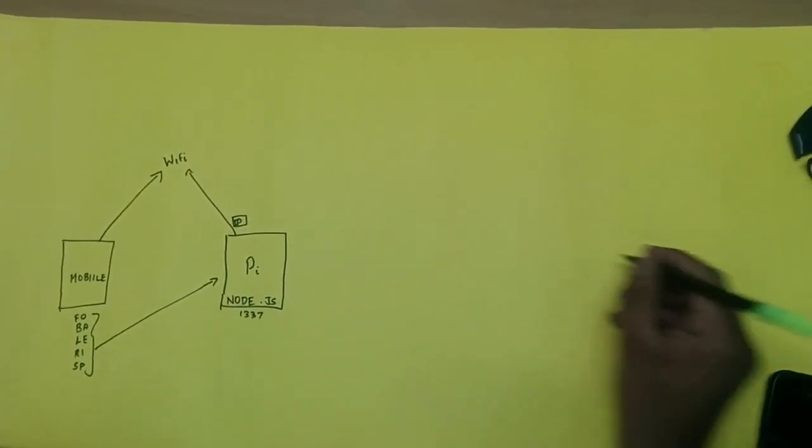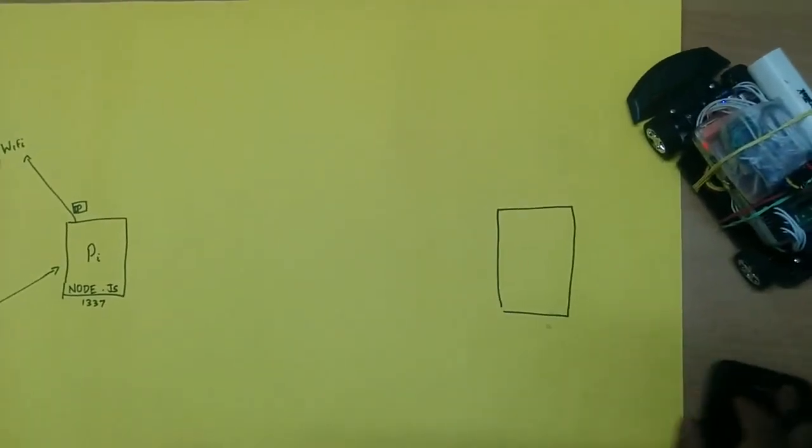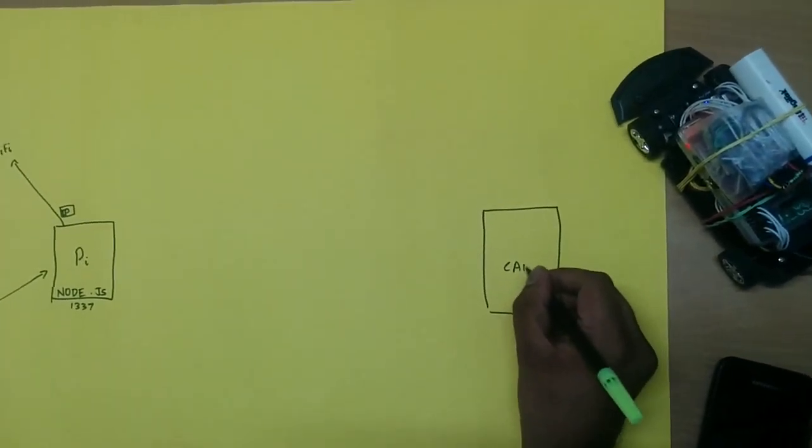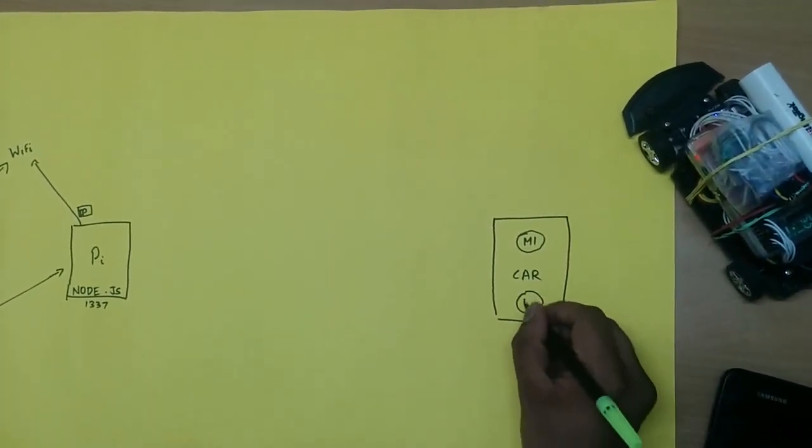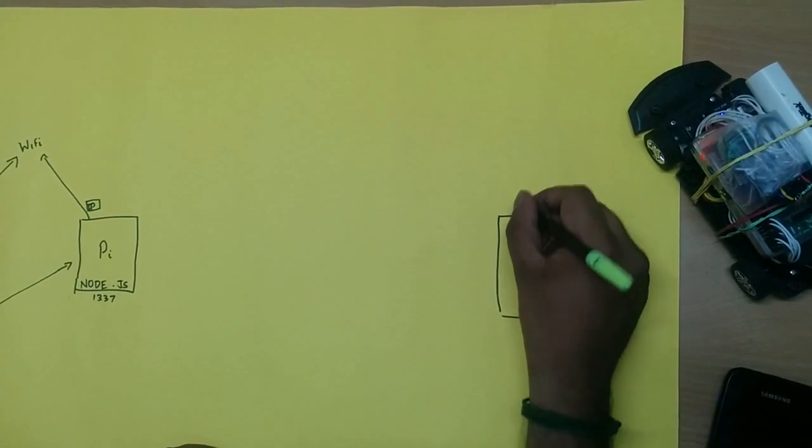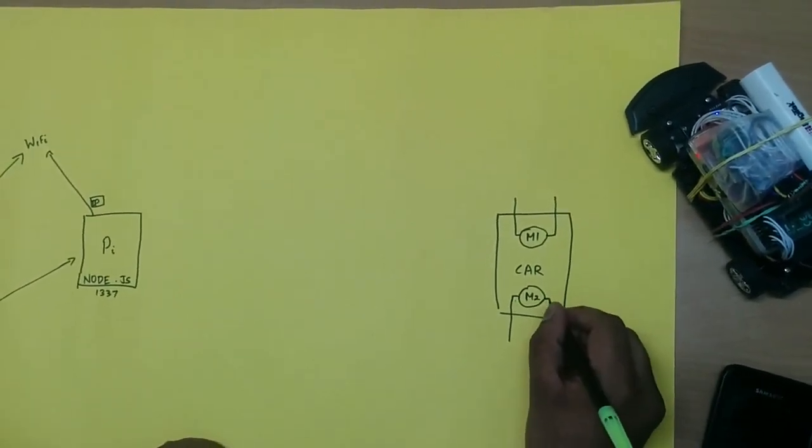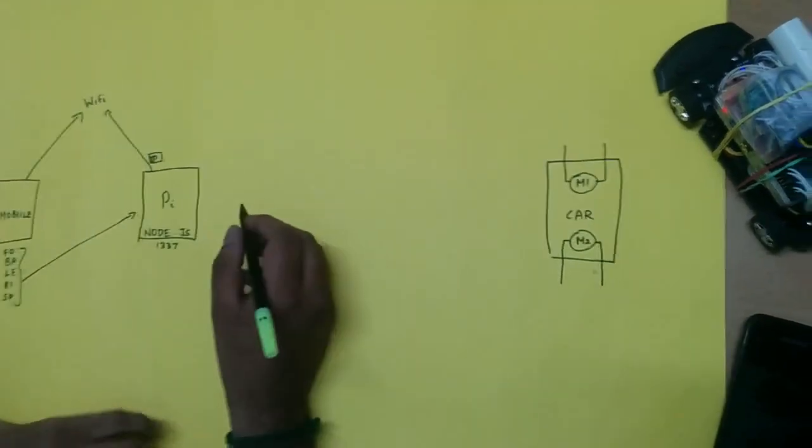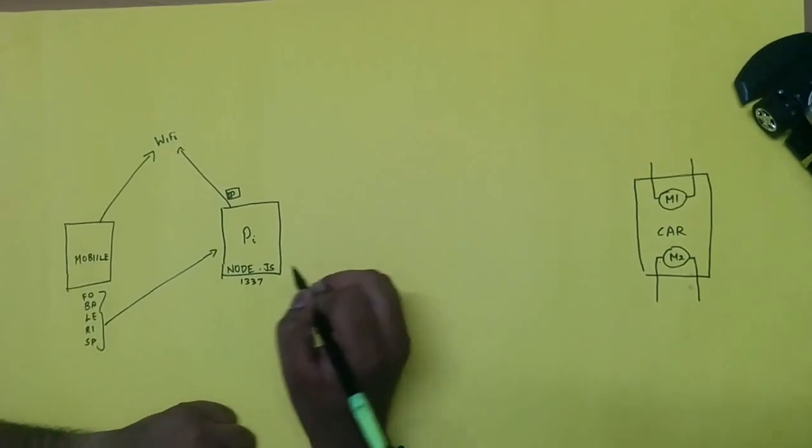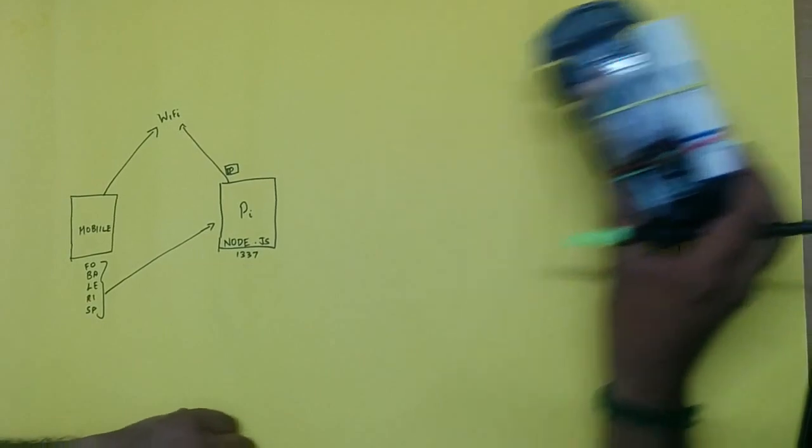So this pi has to read whatever input is coming from mobile and controls my motor. So how the motor is being controlled, there's a car, the car has two motors M1 and M2. This motor controls the direction left and right and this motor controls the motion forward, backward and the speed.